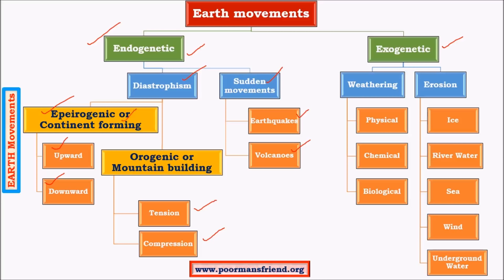Exogenetic forces are those emanating outside the earth's surface, or sometimes even within it. These movements can be classified as weathering and erosion. Weathering is where a particle falls from a rock and settles in the neighborhood of that rock, whereas in erosion the weathered particles are carried away over longer distances by erosional agents such as ice, water, sea, and wind.